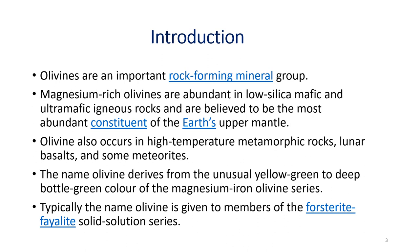There are different types of meteorites such as stony meteorites, iron meteorites, and so on. The name olivine derives from its unusual yellow-green to deep bottle-green color, which is characteristic of the magnesium-iron olivine series. The name olivine is typically given to members of the forsterite-fayalite series, which form a solid solution series.